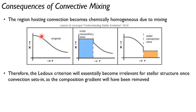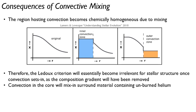You started out with a composition gradient, you turn on convection. When that turns on, the Ledoux criterion will be relevant. But once convection turns on, then you don't really care about the Ledoux criterion anymore. You're just into the Schwarzschild criterion, because there is no composition gradient anymore. So that's one interesting consequence.